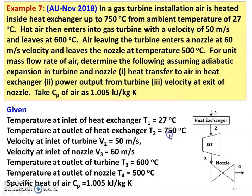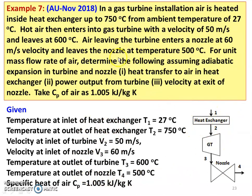This is the arrangement: we have a heat exchanger, a gas turbine, and a nozzle — three devices connected in series. The temperature at the inlet of the heat exchanger, T1 = 27°C. Temperature at the outlet of the heat exchanger, T2 = 750°C. Velocity at the inlet of the turbine, V2 = 50 m/s. Velocity at the inlet of the nozzle, V3 = 60 m/s. Temperature at the outlet of the turbine, T3 = 600°C. Temperature at the outlet of the nozzle, T4 = 500°C. CP = 1.005 kJ per kilogram Kelvin. A diagram is better when we have multiple devices in series.